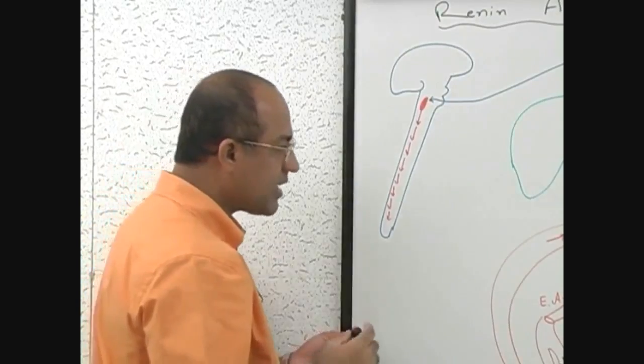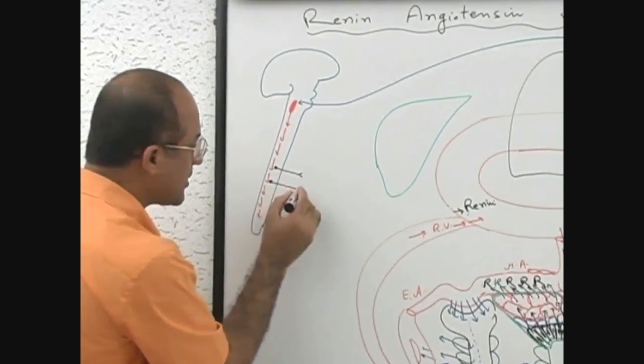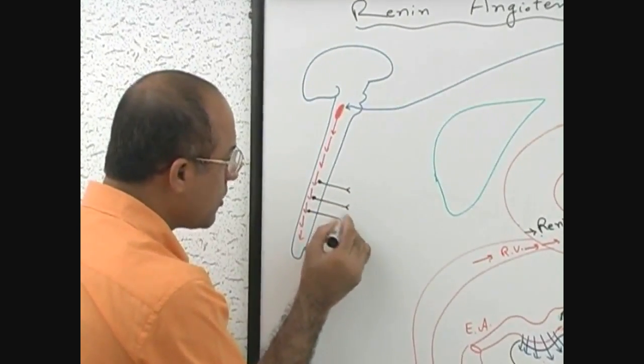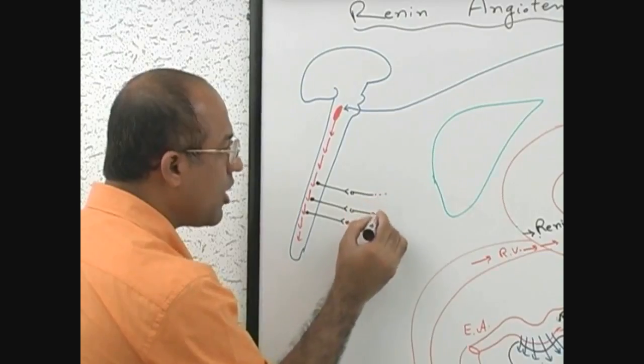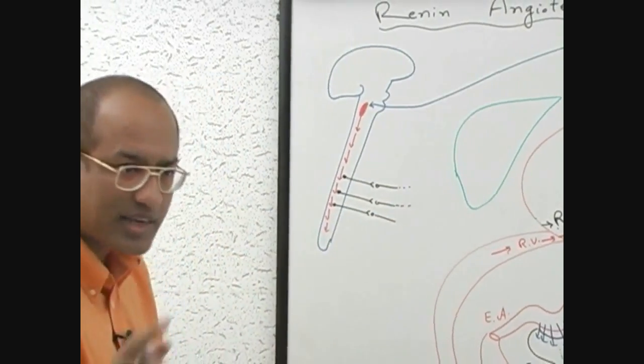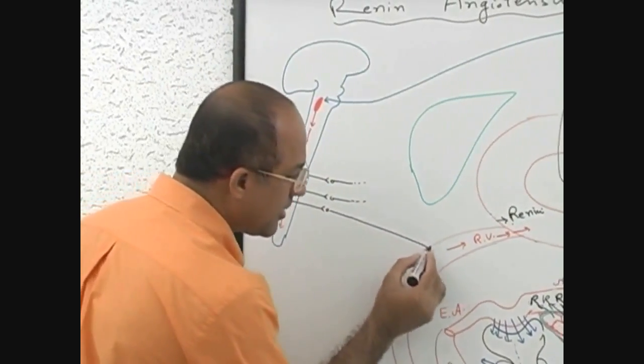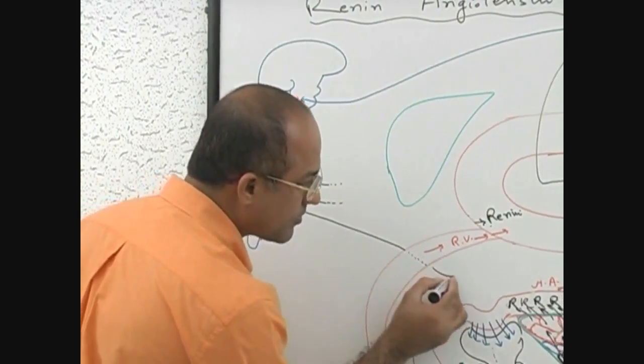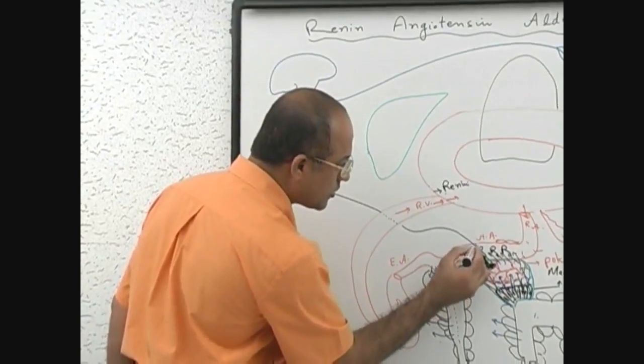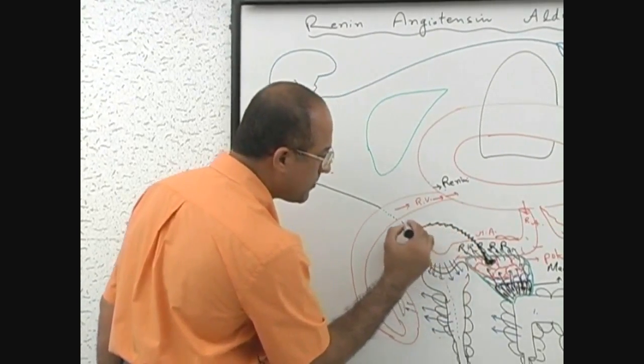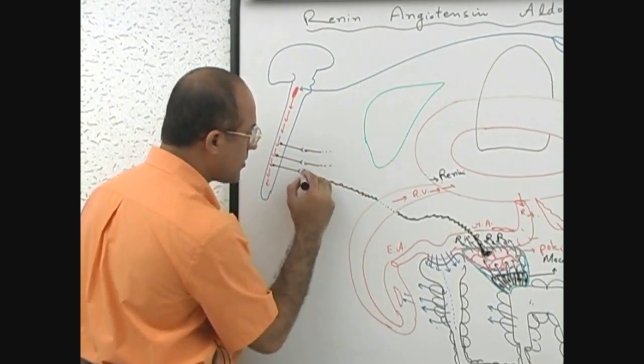This sympathetic outflow which is going out - suppose these are pre-ganglionic sympathetic neurons and here are post-ganglionic sympathetic neurons. Right now we are concerned only with those sympathetic fibers which are coming to juxtaglomerular apparatus.